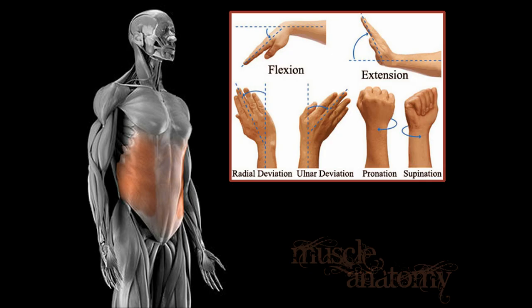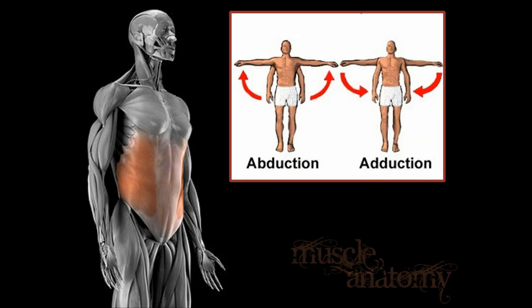I'll also talk about pronation and supination. An easy way to remember supinate is to cup your hand like you're holding a bowl of soup, and if you dump the soup, that's pronation. For abduction and adduction, remember that adduction is adding to the body, and abduction is taking away.